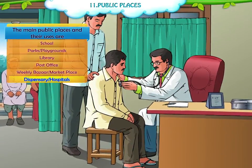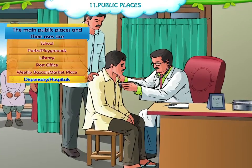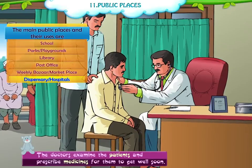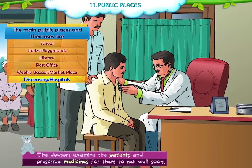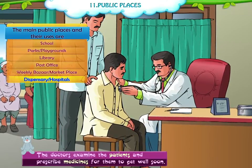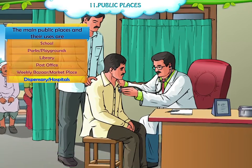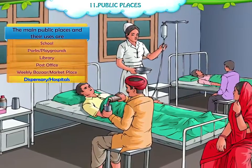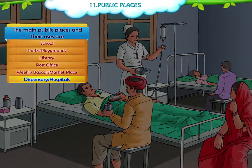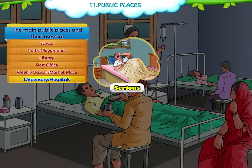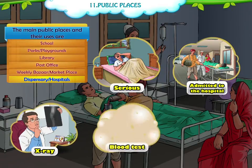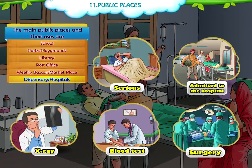Dispensary or Hospitals. In dispensaries and hospitals, the doctors examine the patients and prescribe medicines for them to get well soon. The nurse takes care of the sick people. If the patient is serious, then he or she is admitted to the hospital where x-ray, blood test and surgery, etc., are done if necessary.